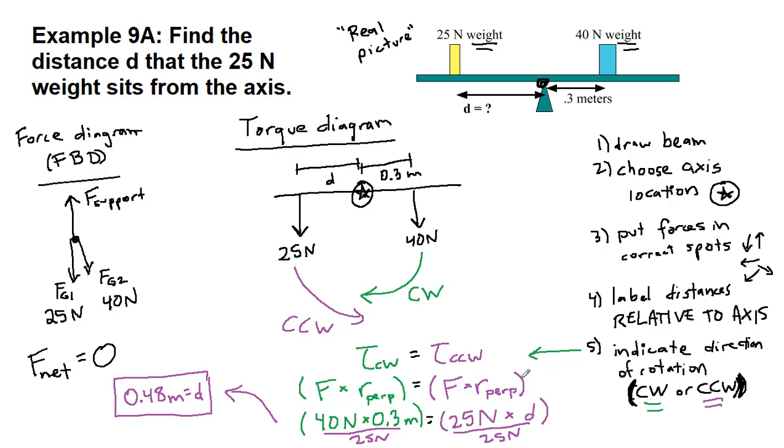So if we are skipping steps, it is quite straightforward to just write down 40 times 0.3 equals 25 times d and get the correct answer. But that is useless to future you if that's the only thing you have in your notes. And it's really useless to future you if that's the only thing you put on your problem set, because then you can't really look back at it to study for either the test or the final exam.